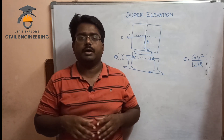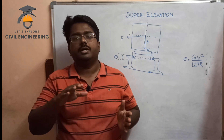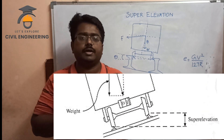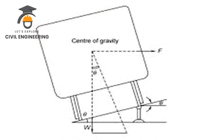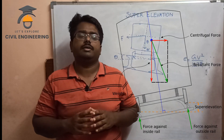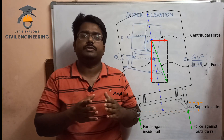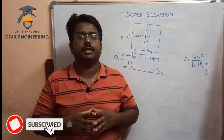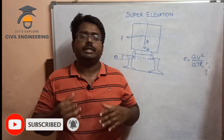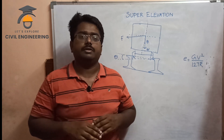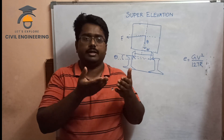The centrifugal force increases the center of gravity. The line of center of mass tilts, and the height difference increases. This height difference is the super elevation of railways.